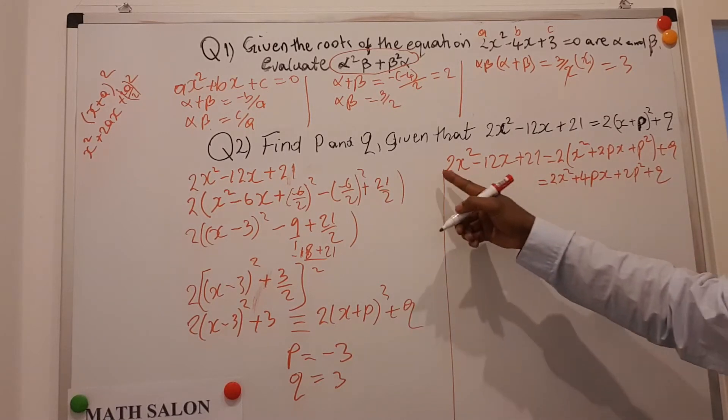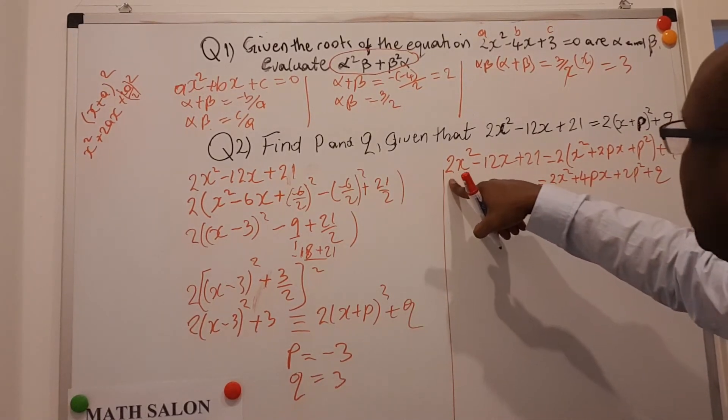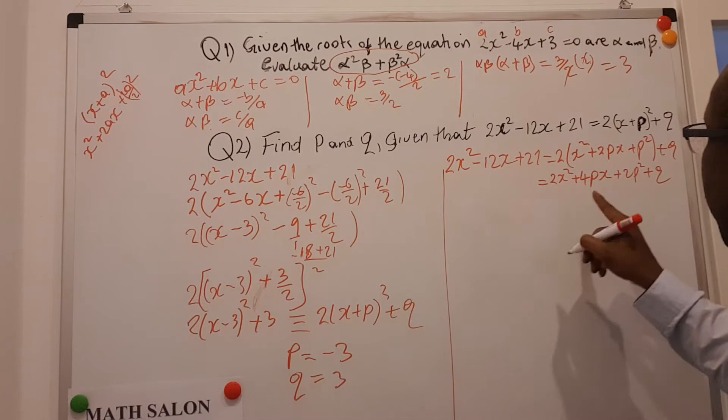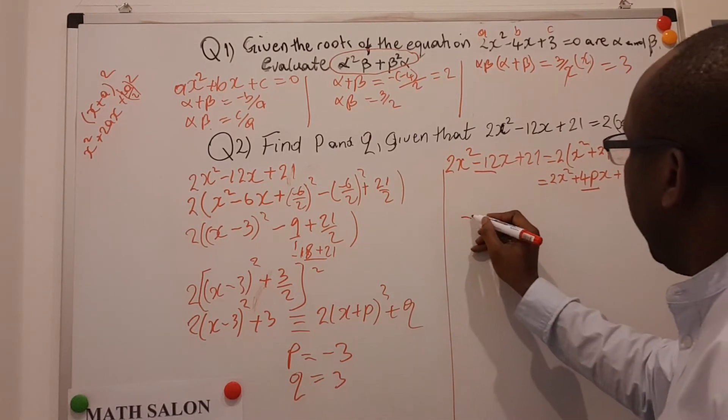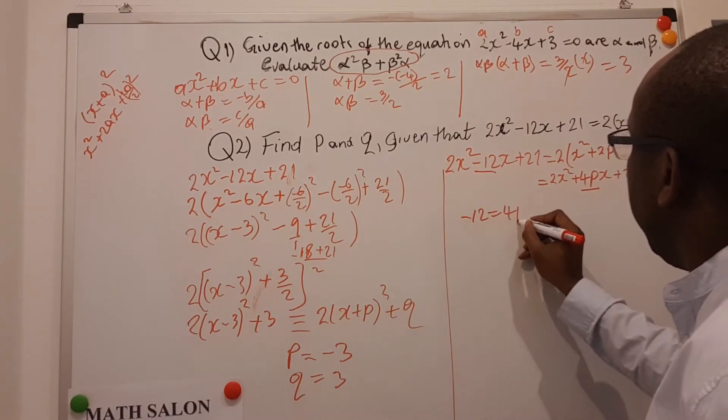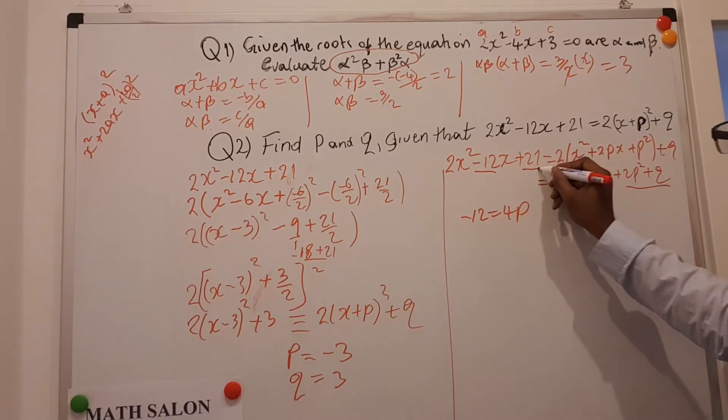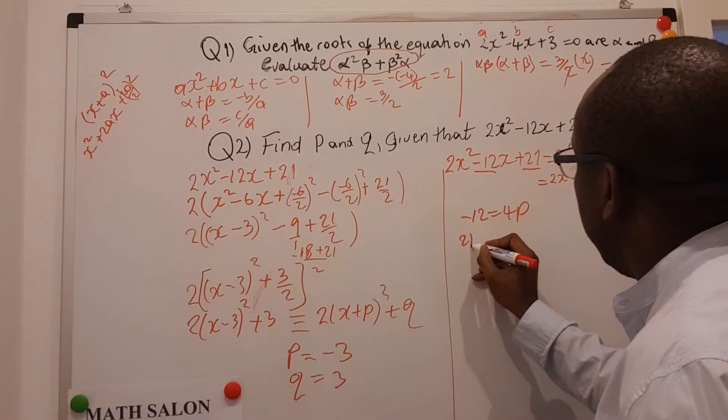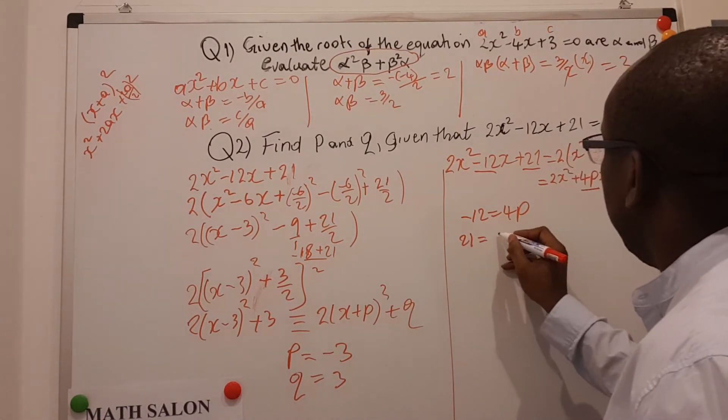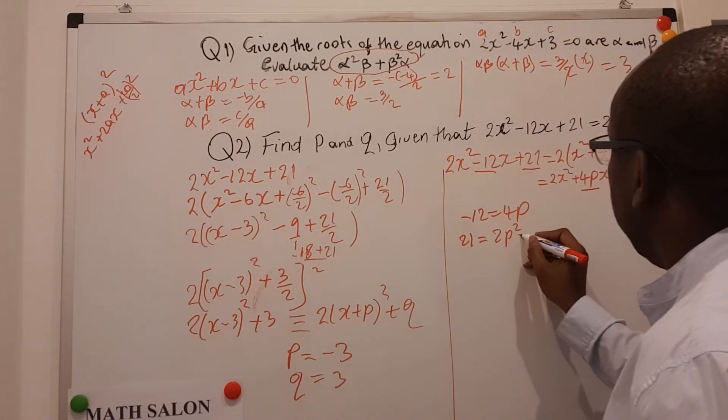If I try to compare coefficients here, 2 is equal to 2, that's fine. Minus 12 should be equal to 4p. So minus 12 is equal to 4p, and this one is a constant, must be equal to that. And 21 should be equal to 2p squared, plus q.